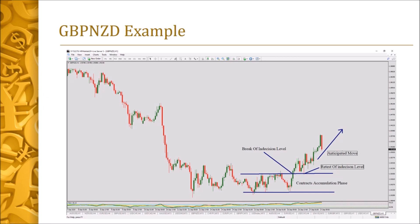Basically, that is what you'll be looking for whenever you use this simple market structure strategy. Your stop loss should be below the indecision point or indecision level, and your take profit should be at least twice the number of pips you've placed on the stop loss.